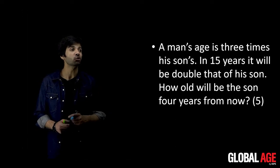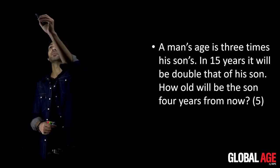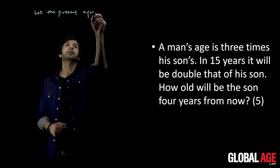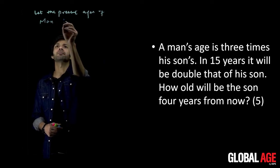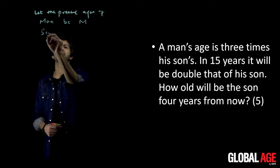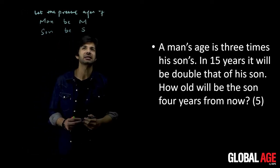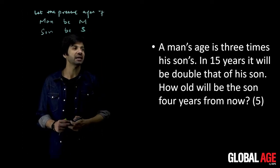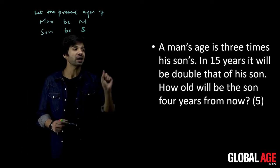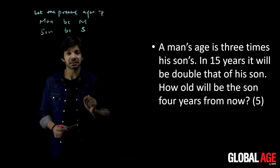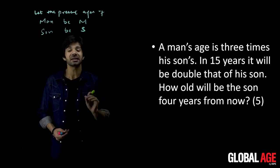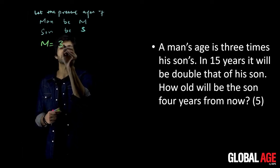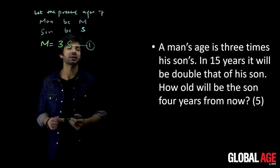It's written that a man's age is three times his son. Let the present age of man be M and son be S. I suppose the present age, the existing age - let's suppose man is M years old and son is S years old. So as per the statement, man's age is three times his son's. This means that the present age M is equal to three times the age of his son. So this is your equation number one.